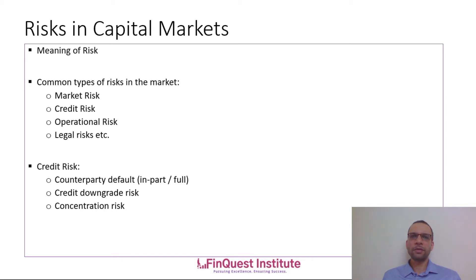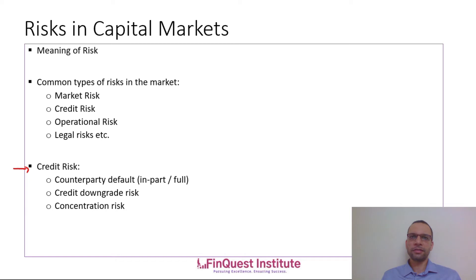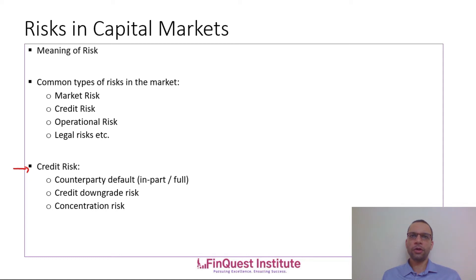Credit risk is defined as the risk of default, and it's the most important portion of risk when we discuss CCPs. Operational risk can be internal — such as a rogue trader failure or internal systems failure — or external, like a cyber attack. Legal and compliance risks are non-quantitative risks related to laws and regulations in a particular jurisdiction.